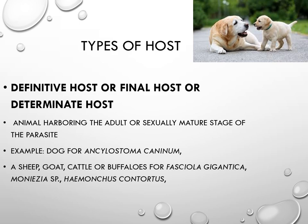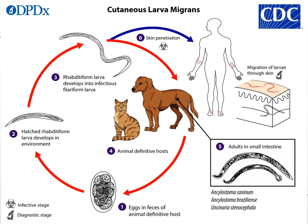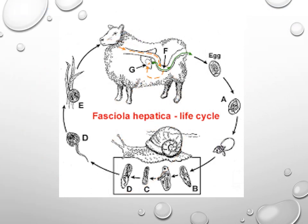Ancylostoma caninum can be transmitted through larval penetration to other hosts including human beings, puppies, and cats — migrating through the skin. In the life cycle of Fasciola hepatica, the parasite is present in the liver of sheep that graze on marshy areas. The definite or final host is the sheep, while the intermediate host is the snail. These are examples of the definite host and intermediate host relationship.